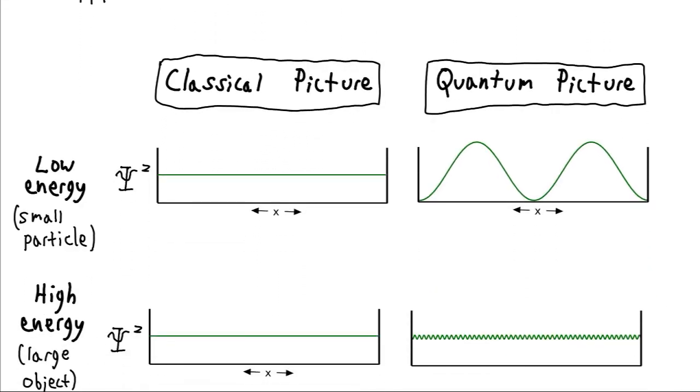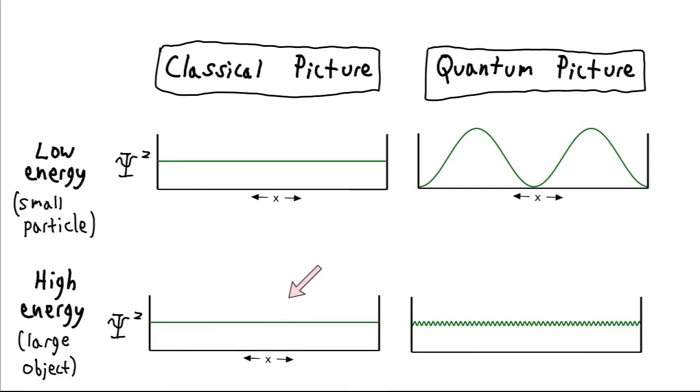Well if we have a very high energy, then it's the same situation in the classical case, still equal probability of observing our billiard ball or whatever bouncing back and forth in any location. Our quantum picture, now we have a much higher energy wave. So then we're going to get a lot more wavelengths here, a much higher frequency. And you can see that this kind of looks like this.